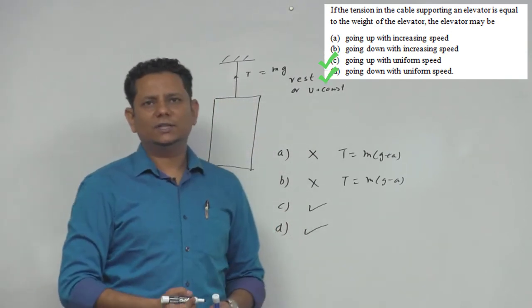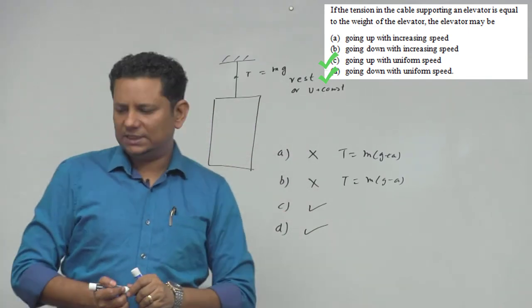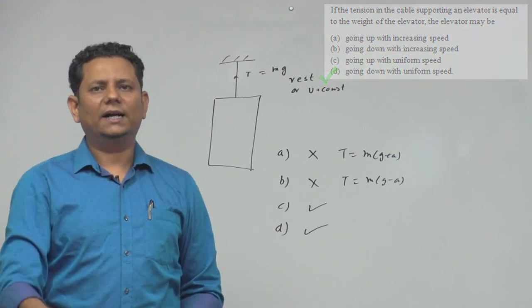In both these cases, your velocity will be constant, hence your tension will be equal to mg. So for this question, C and D options are the right choice.